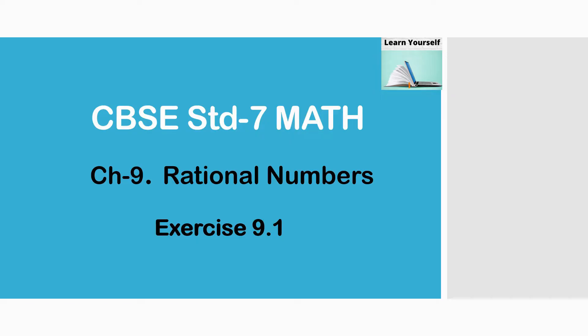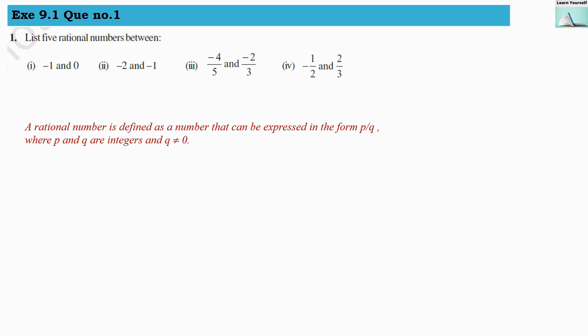Welcome to Learn Yourself, Exercise 9.1, Question Number 1: list 5 rational numbers between the given numbers. There are two numbers and we have to find out rational numbers between these two. Let us first understand what is the meaning of a rational number. A rational number is defined as a number that can be expressed in the form of p by q.